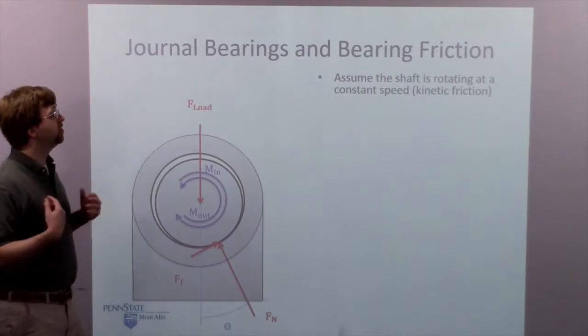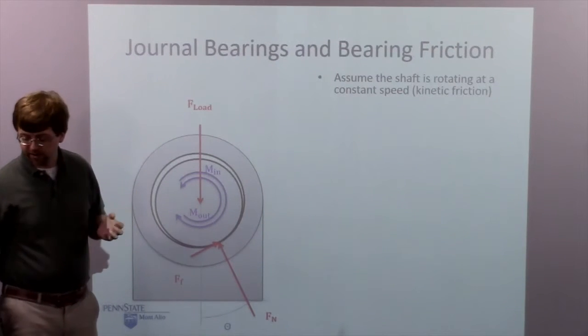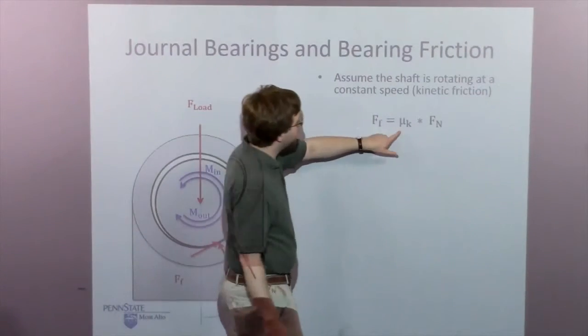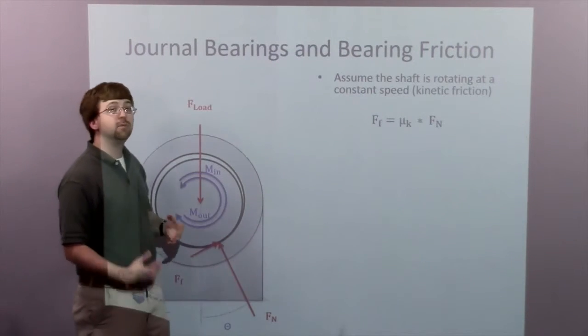Looking at this we can analyze it using a few assumptions. First, we're going to assume the shaft is rotating at a constant speed and we have kinetic friction. So that friction force is going to be the kinetic coefficient of friction between the shaft surface and the sleeve surface times the normal force.